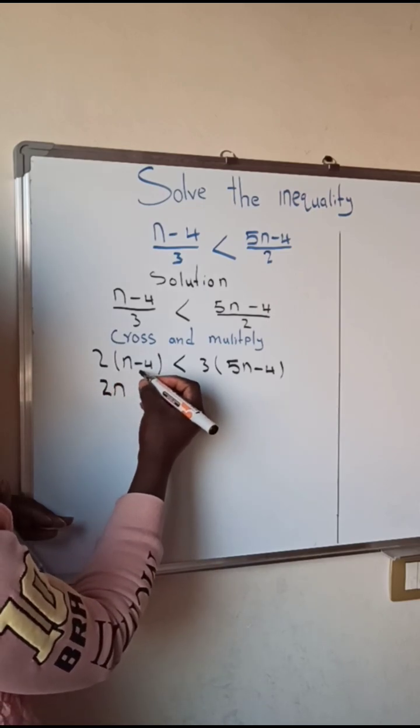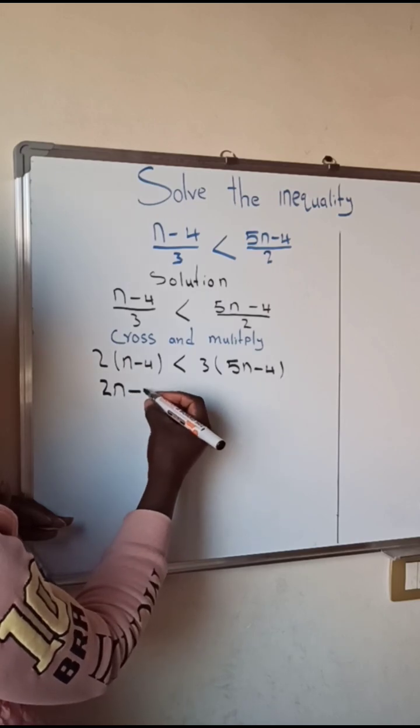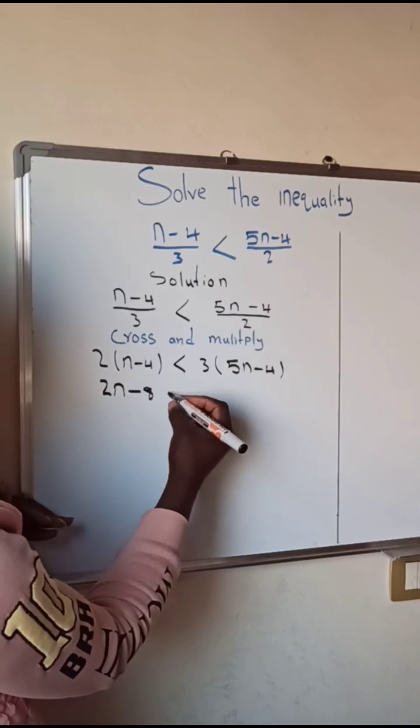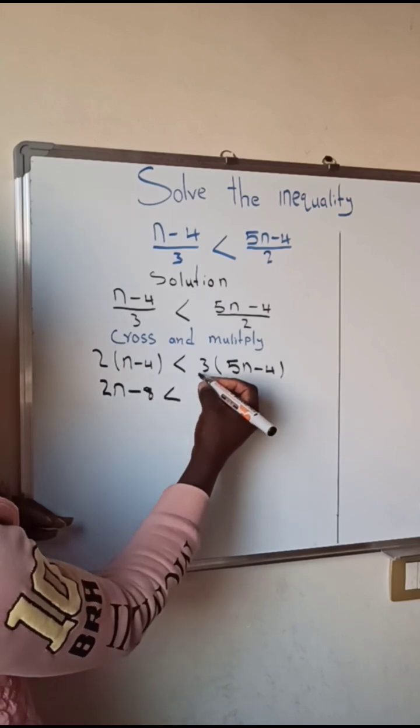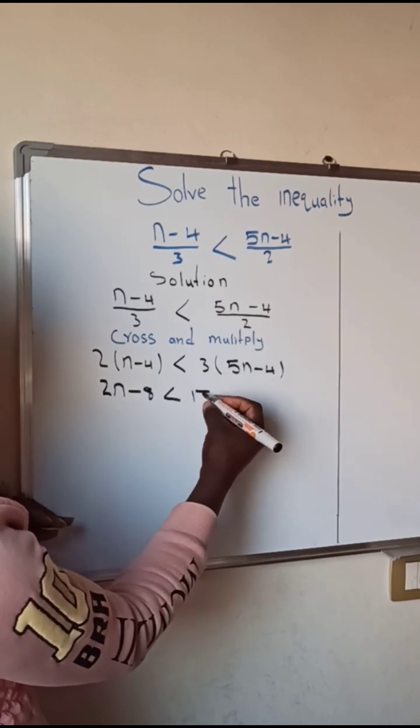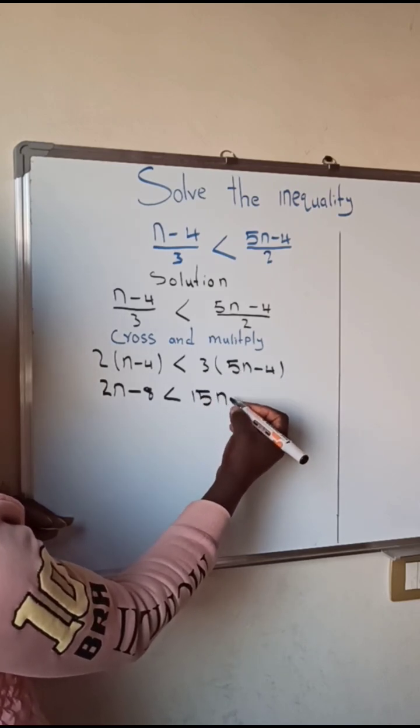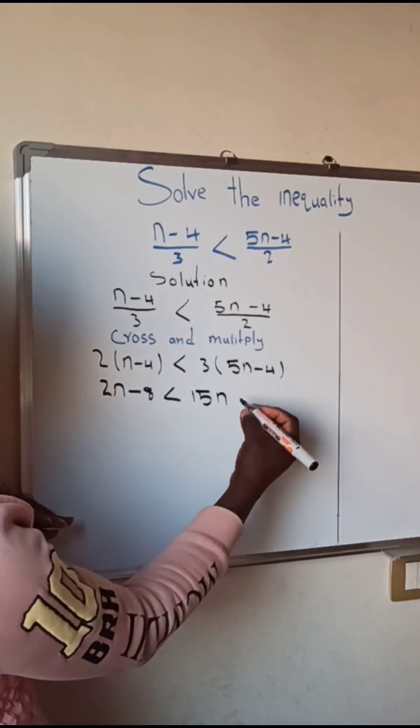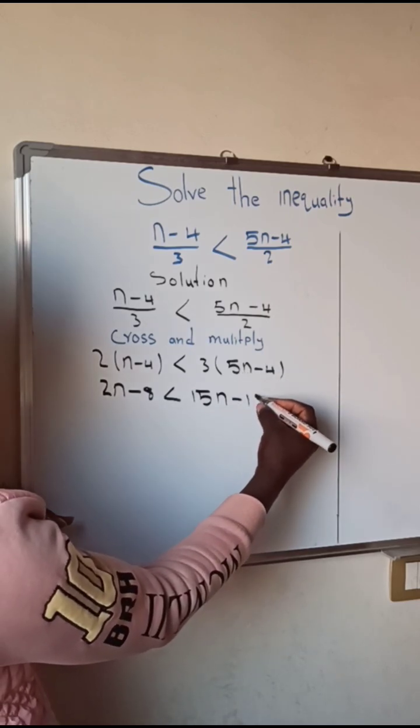So we have here less than... we have here 3 times 5 is going to give us 15n, and 3 times negative 4 which is going to give us negative 12.